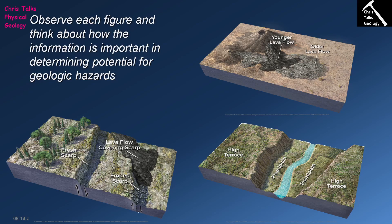It does however have serious implications — we can use this information for reasons beyond just our own academic entertainment. For instance, if we are concerned about how often a volcano erupts and the hazards it might cause, we can go and date different lava flows associated with that volcano, and by dating these lava flows we can essentially come up with a history of how often the volcano erupts.